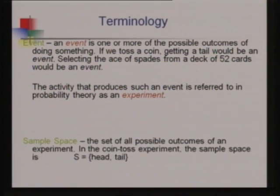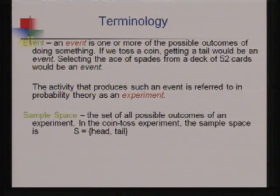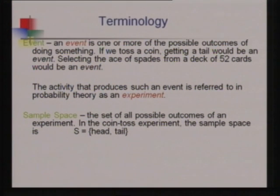To start with knowing the probability, we always start with the sample space. If an experiment is conducted, all possible outcomes are collected into a set called the sample space. In a coin toss experiment, head and tail together form the sample space — provided the coin does not stand on its edge — so only head or tail defines the sample space.